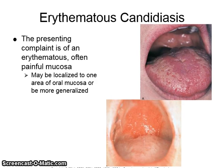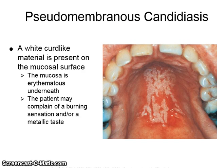Erythematous candidiasis presents with an erythematous, often painful mucosa, which may be localized to one area of the oral mucosa or be more generalized. In pseudomembranous candidiasis, a white curd-like material is present on the mucosal surface. The mucosa is erythematous underneath, and the patient may complain of a burning sensation and/or a metallic taste.